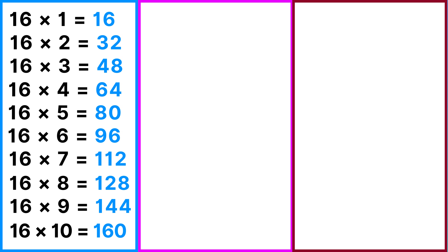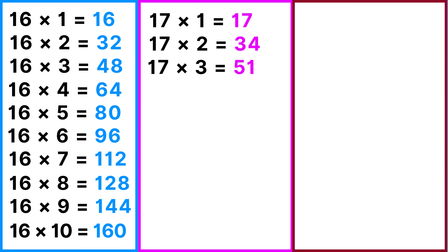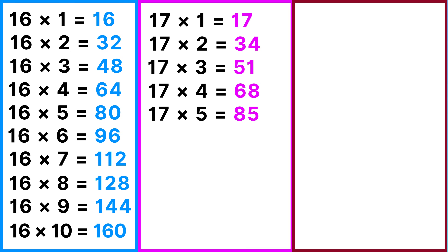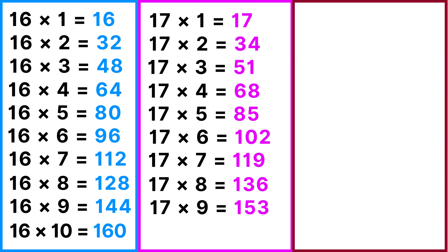Table of 17: 17 ones are 17, 17 twos are 34, 17 threes are 51, 17 fours are 68, 17 fives are 85, 17 sixes are 102, 17 sevens are 119, 17 eights are 136, 17 nines are 153.